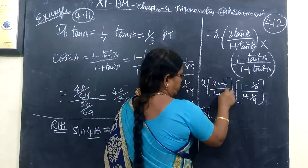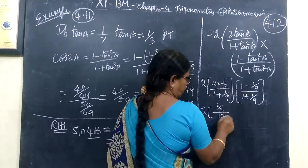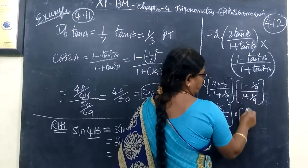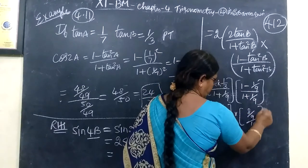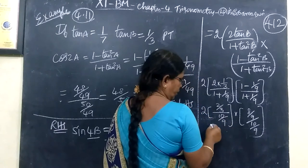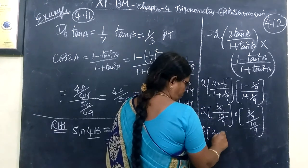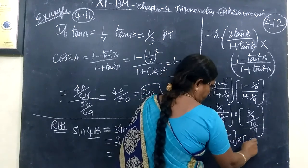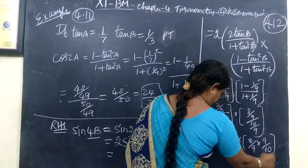So, 2 bracket, 2 by 3 cross multiply, 10 by 9. Then, into cross multiply 8 by 9, 10 by 9. Cancel it. So, we are doing reciprocal. 2 by 3, 9 by 10, 8 by 9, 9 by 10.